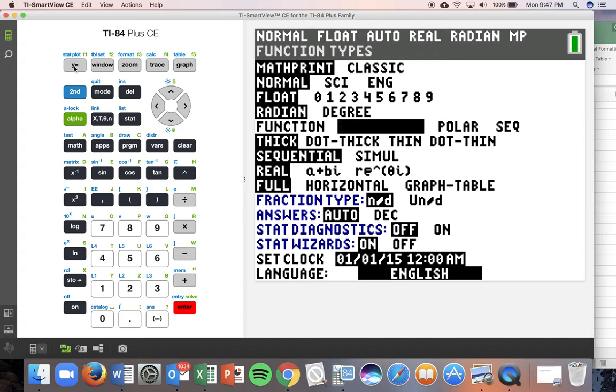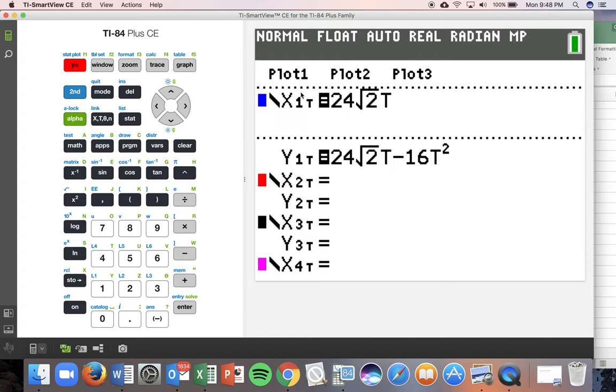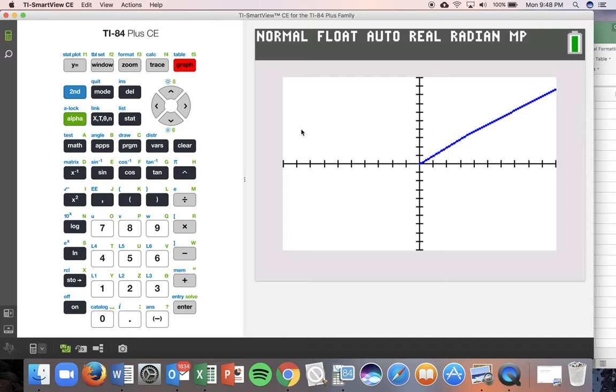Then you're going to click your y equals, and you can see that we've automatically been set up with each function containing an x equals equation and a y equals equation. I've already went ahead and input our parametric equation from that first example: x equals 24 root 2t and y equals 24 root 2t minus 16t squared. If we just went ahead and hit graph at this point, it looks like we can probably see a portion of it, but we're not seeing the entire portion of the graph.